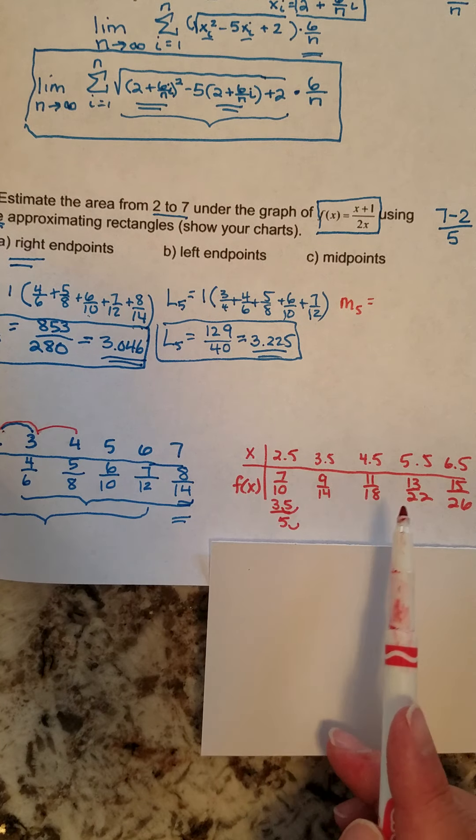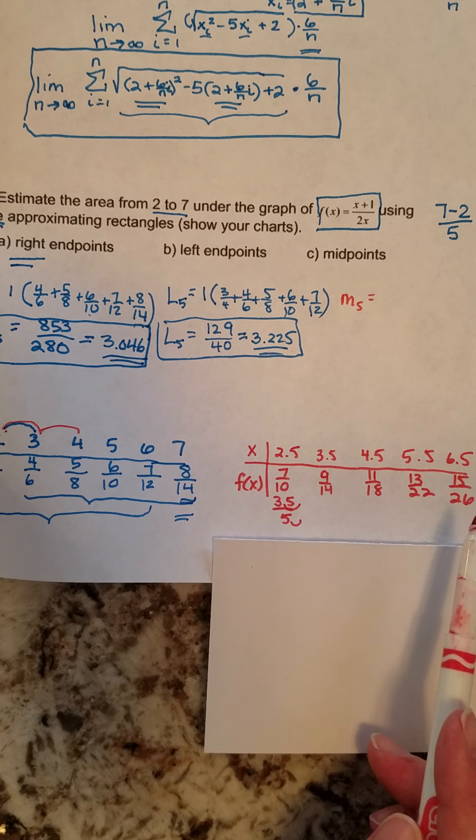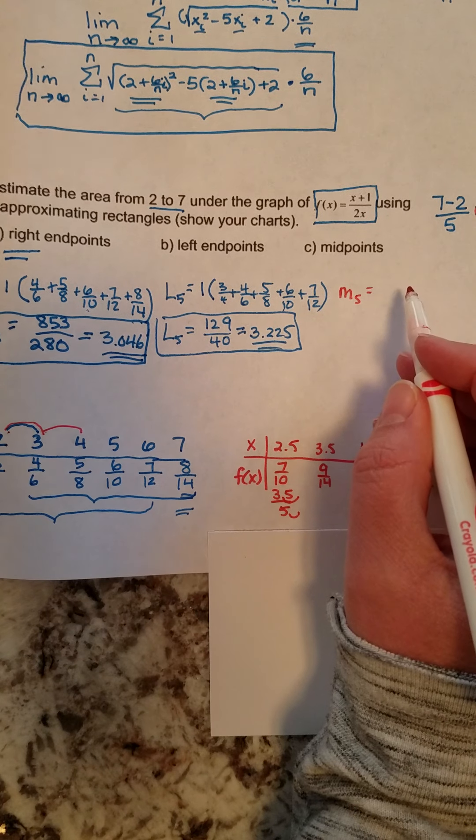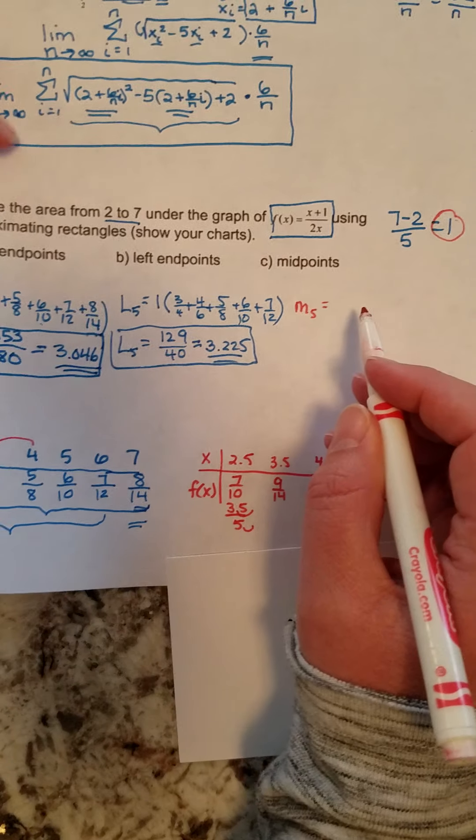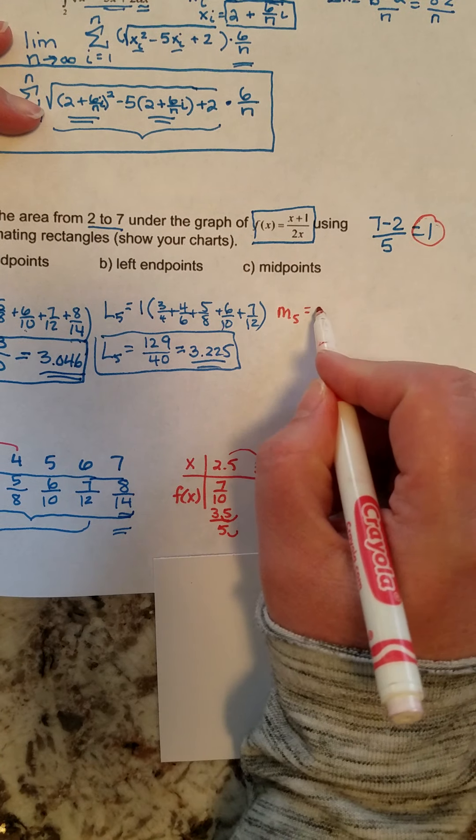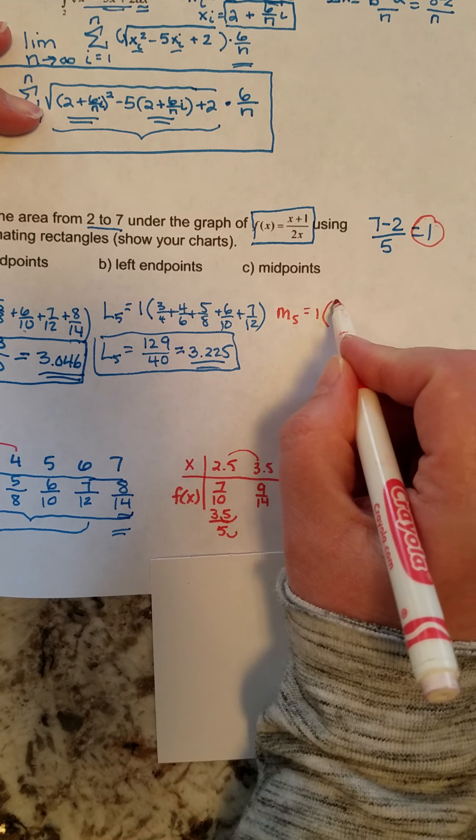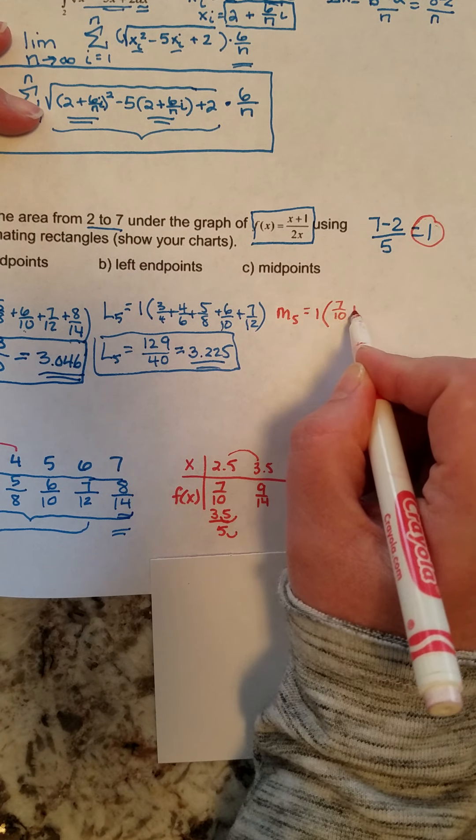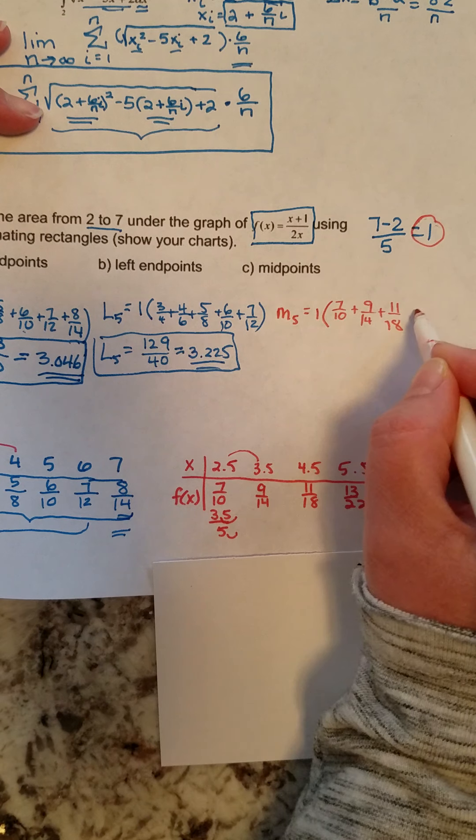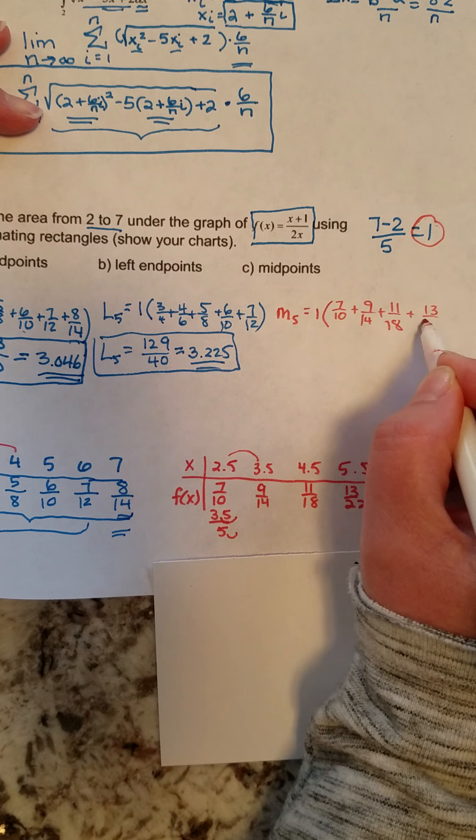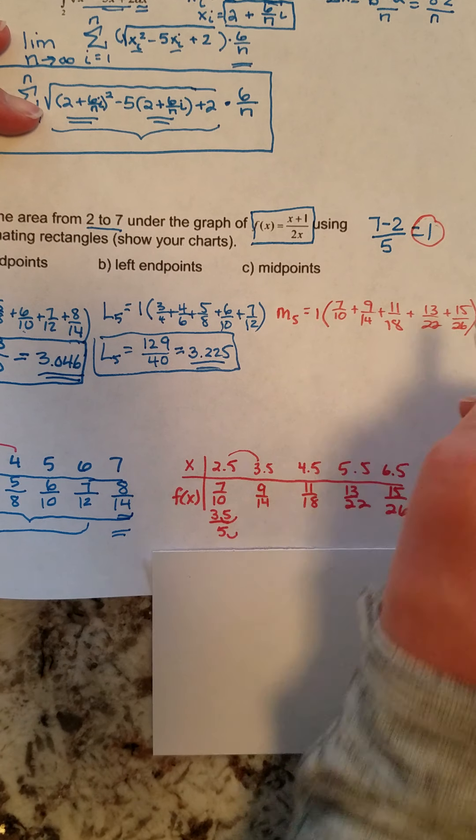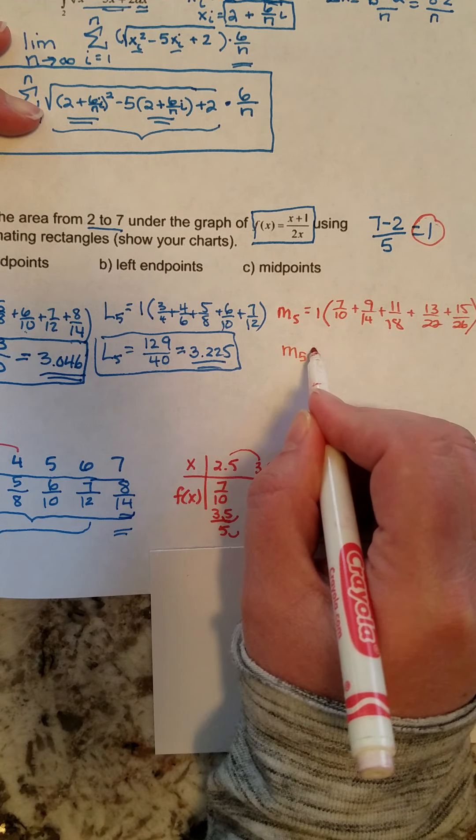9 fourteenths, 11 eighteenths, 13 twenty-seconds, and then 15 twenty-sixths. When I complete this problem for the midpoints, I take the distance between the x's, which is again still 1, and I'm going to take each of my y values: 7 tenths plus 9 fourteenths plus 11 eighteenths plus 13 twenty-seconds plus 15 twenty-sixths. You're welcome to use your calculator to add those numbers together.